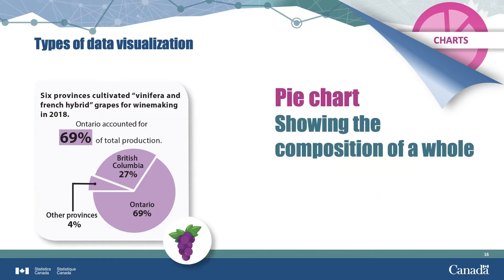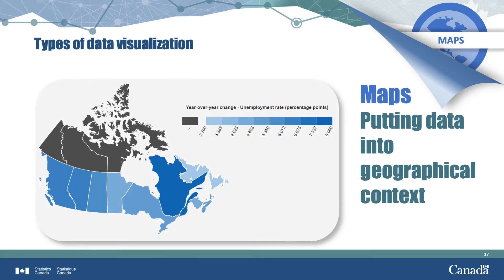A pie chart is the perfect tool for showing the composition of a whole, or the distribution of something. Here, we see that in 2018, Ontario produced more grapes for winemaking than all the other provinces combined. Here is an example of a map being used as data visualization. It shows how the job vacancy rate differs across provinces. The job vacancy rate for each province in Canada is indicated by the shading on the map.